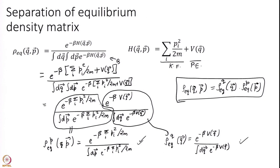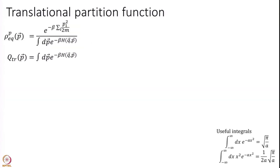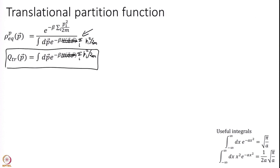Let us look at rho equilibrium of P for a moment. We can actually simplify it a little bit more. I have rewritten rho equilibrium of P. Now the denominator that we have here — this should be sum over i P_i squared over 2m — this denominator is called the translational partition function. Why translational? Because it is simply kinetic energy. This is the partition function when V of Q is zero, for a free particle. And we can actually simplify it and calculate it — we can find a closed-form answer for this.